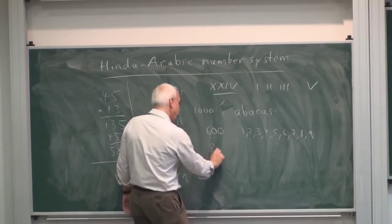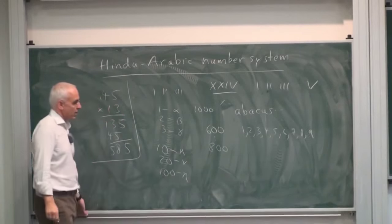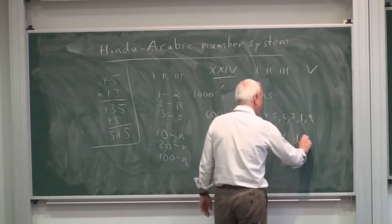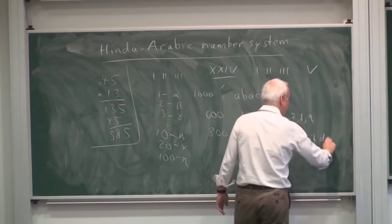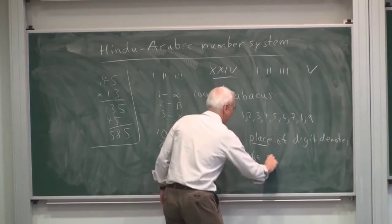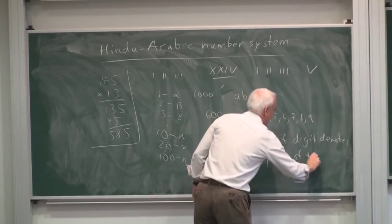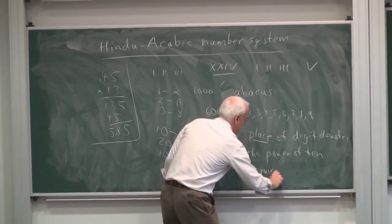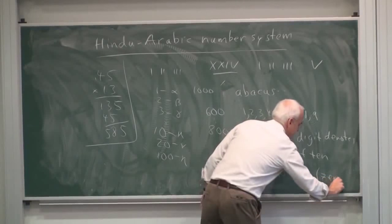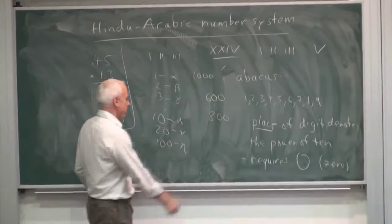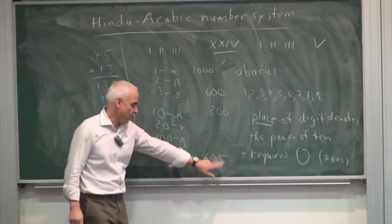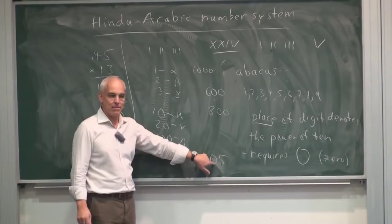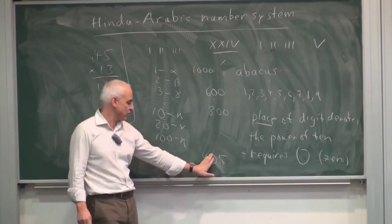And then in the next couple of hundred years, around 800, they developed the system that we now use where the place of the digit denotes the power of 10. And that required an important innovation that they didn't have around 600. That requires a separate symbol for 0. So when we write 405, this means 5 1s, 0 10s, 4 100s. You have to have the idea that there's going to be an empty place and you've got to put something in that empty place so as not to get confused with 45.